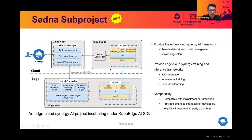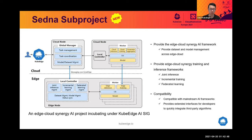In the SEDNA architecture, there is a centralized global manager in the cloud to coordinate with all components on different edge nodes. On each edge node, there is a local controller to support AI workload synergy patterns including joint inference, incremental learning, and federated learning. Application developers can still use TensorFlow, PyTorch, or other AI frameworks, and just need to import the SEDNA library to expose measurement data to the SEDNA project.